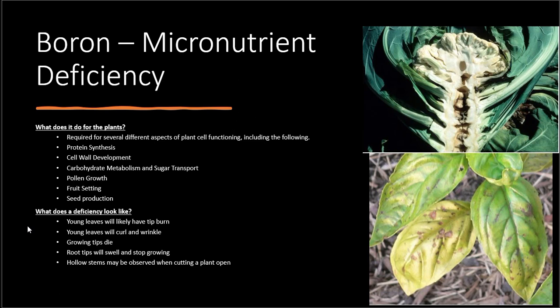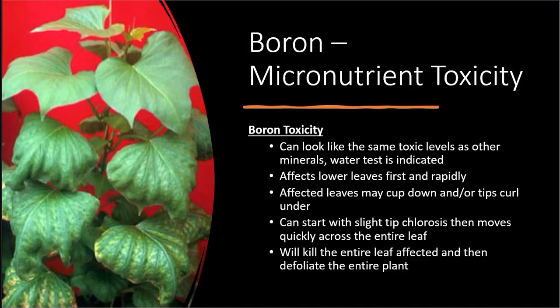Hollow stems may also be observed when cutting the plant open. If you look at this top picture, you'll see that the inside of this cauliflower stem is hollow — it almost looks like it's rotting from the inside out. That's due to a boron deficiency.